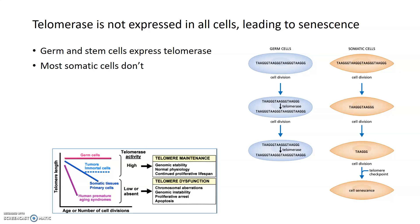Germ cells and stem cells both express telomerase in a normal human. Most somatic cells don't, and that's what leads to senescence. You can see the relationship between telomere length and the number of cell divisions: germ cells or cells that do express telomerase show no change in telomere length over time no matter how many times they divide, because high telomerase activity maintains and replicates them. Whereas normal somatic and primary tissues decrease their telomere length with every cell division because telomerase activity is low or absent, ultimately leading to cell senescence, proliferative arrest, and potentially cell death.